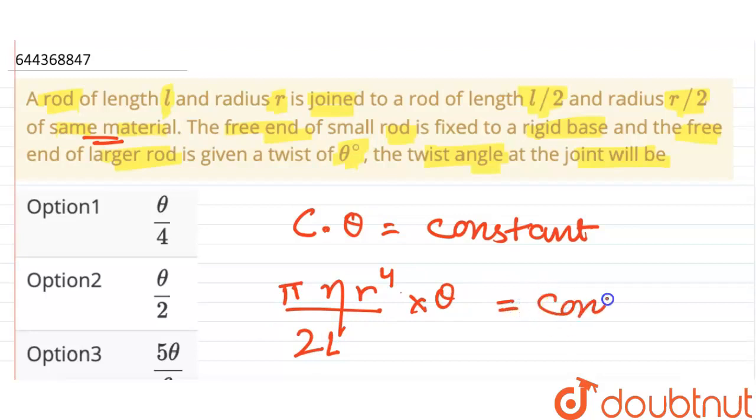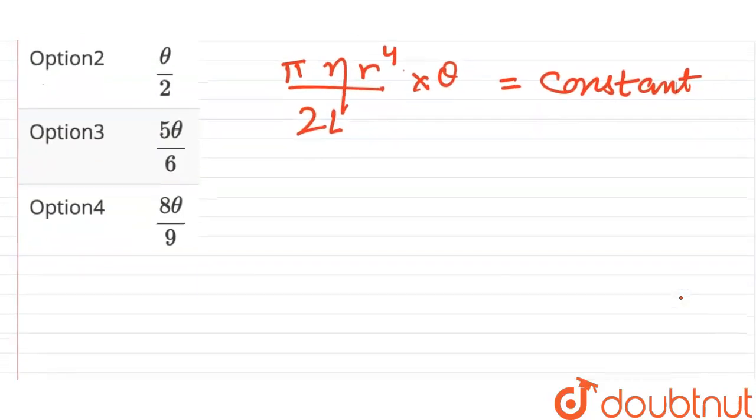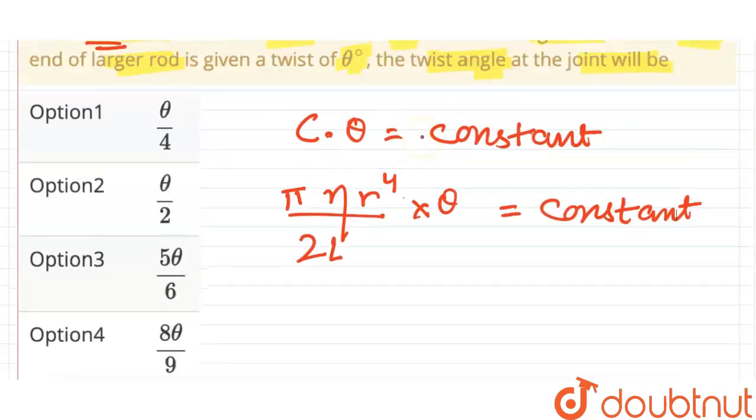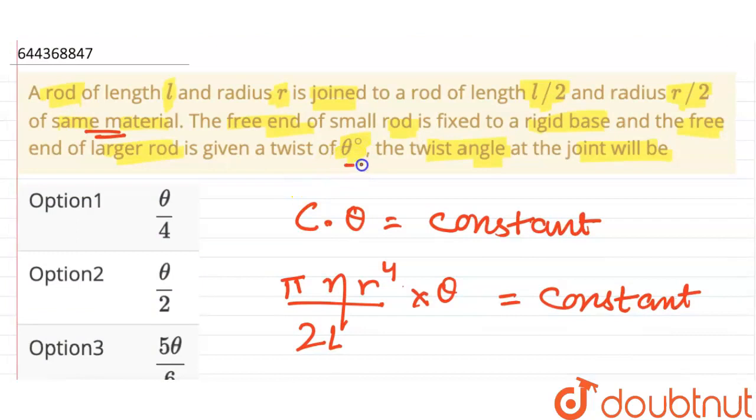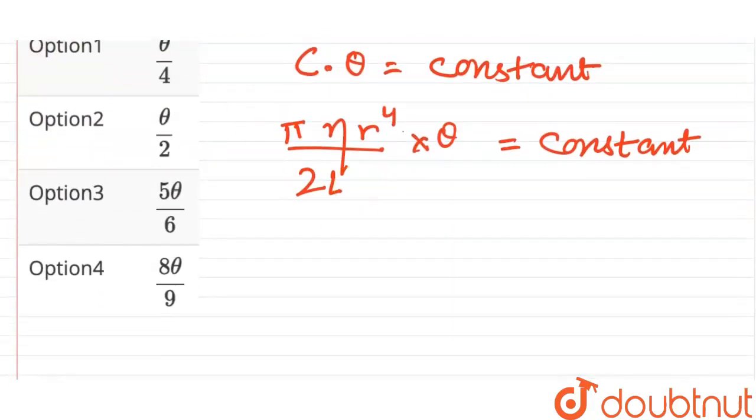Alright, now after this we know over here it is twisted by an angle of theta naught. So now theta will change from theta to theta minus theta naught, that is pi eta r raised to the power 4 into theta minus theta naught upon 2l.